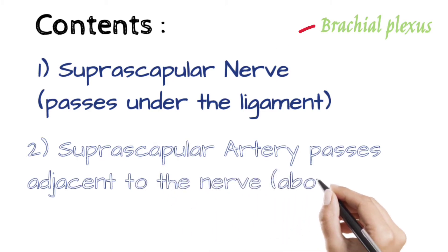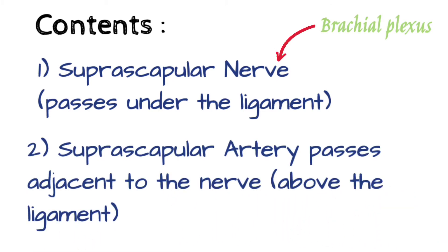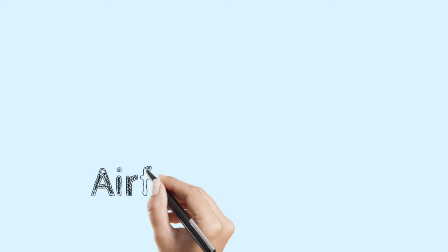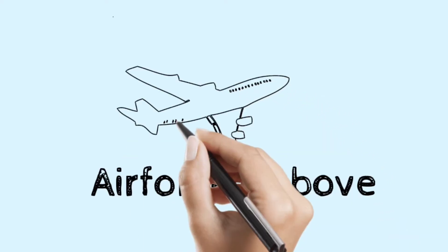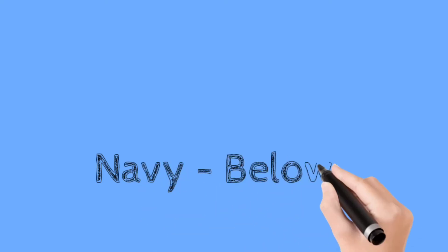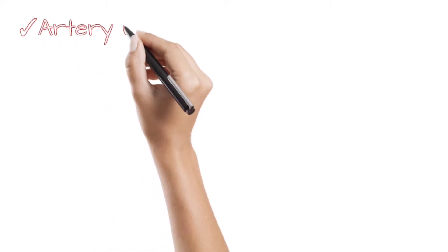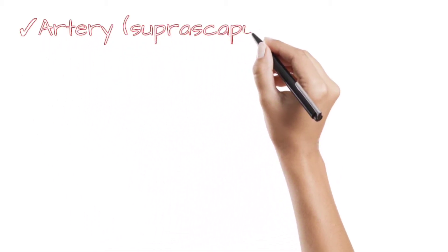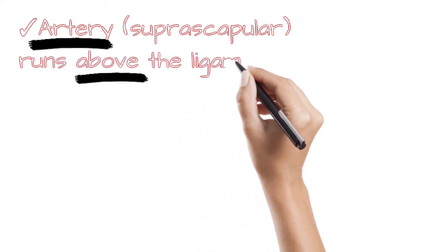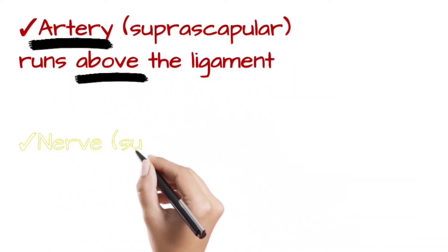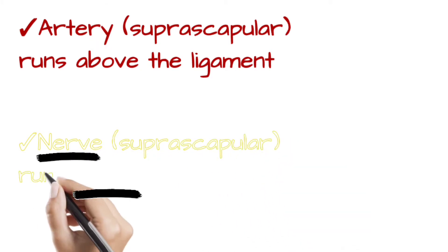Here is a mnemonic to remember what structures lie above and below the ligament. Air force fights above. Navy force fights below. So from this we can remember that suprascapular artery runs above the ligament and the suprascapular nerve runs below the ligament. A for air force, A above. N for navy and it is below.